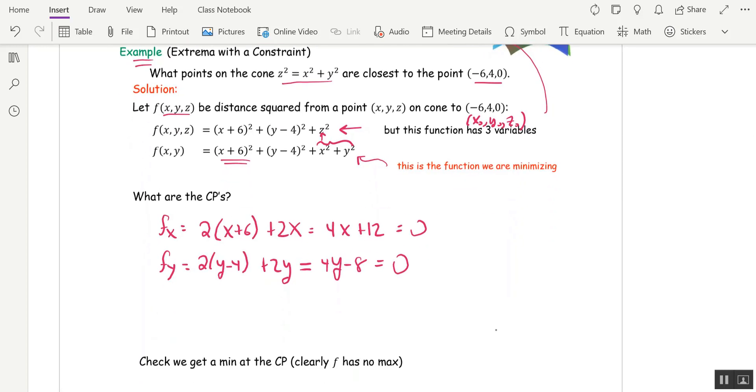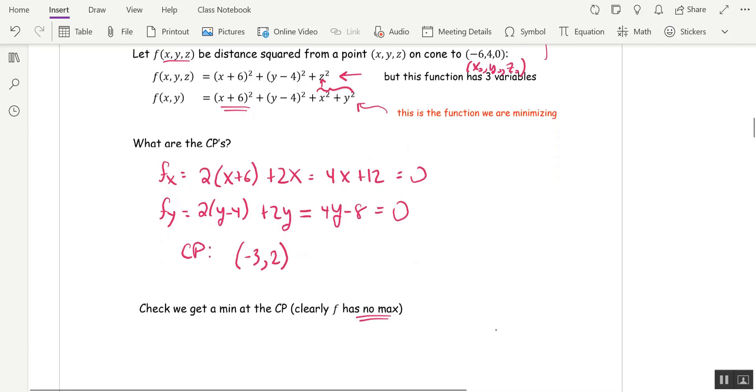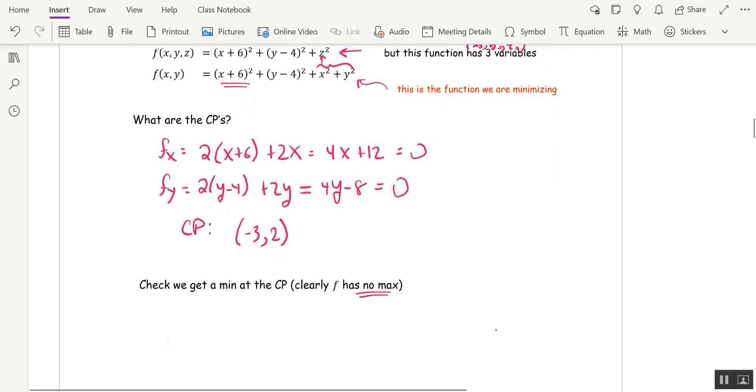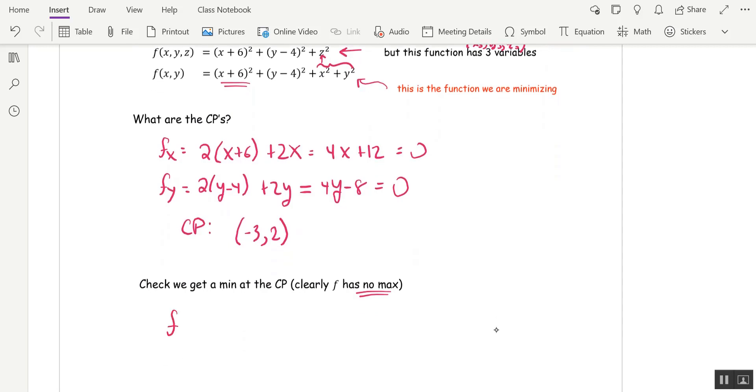And so this is super simple. We only have one critical point. If the first equation is 0, x has to be negative 3. And if the second equation is 0, y has to be 2. All right. Let's check that it's a local min at this critical point. Clearly, f has no max. You might want to pause and think about that statement. Clearly, f has no max. Why is that? All right. So let's just check. Second derivative test.